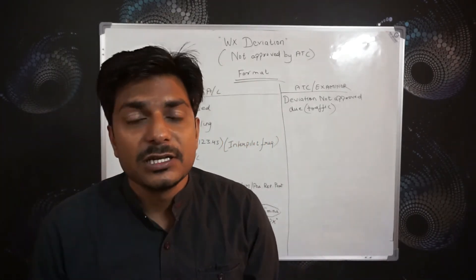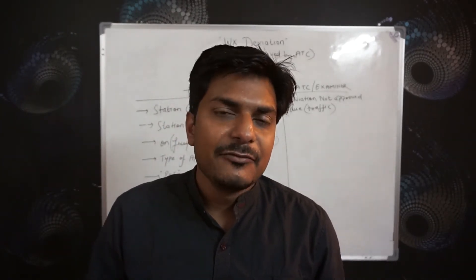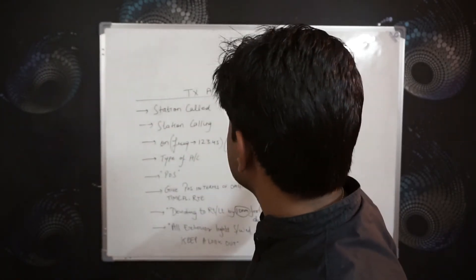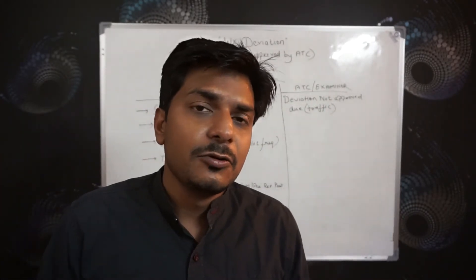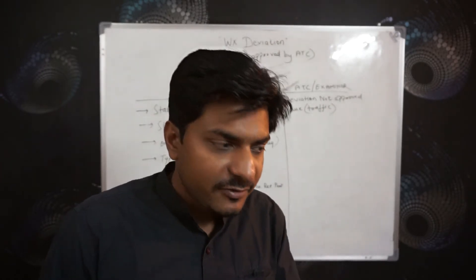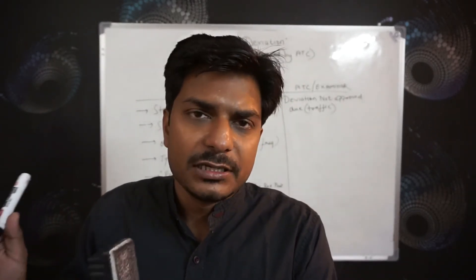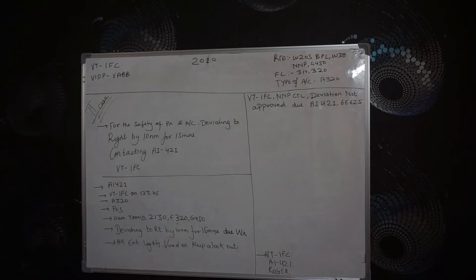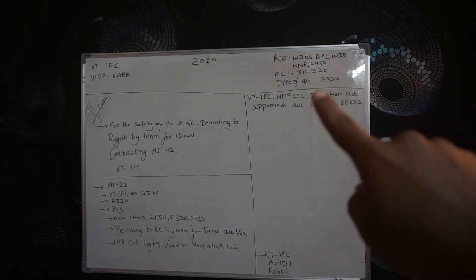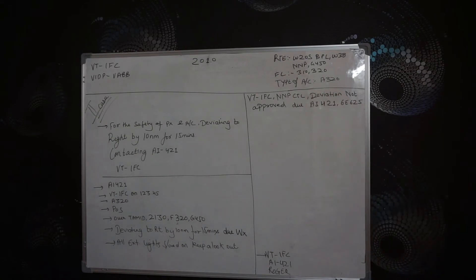I'll take one example covering the case where ATC gives no option for deviation. The flight plan I'm using is the same as from my second-last video on weather deviation. I've added only one thing — the type of aircraft, which is just below the flight level: Airbus 320.